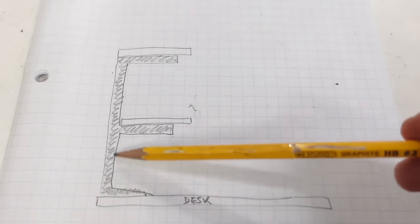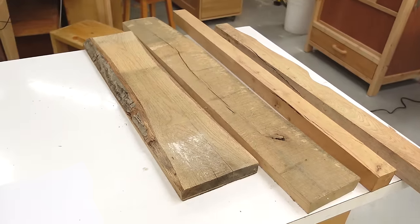I'm going to make two E-shaped frames to hold the shelves over the desk, and I'll use these scraps of oak that I've got kicking around.